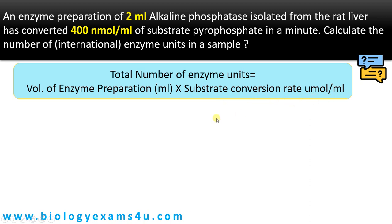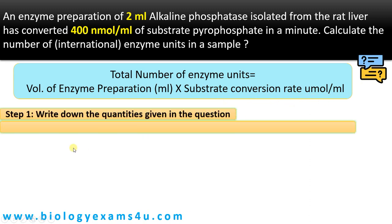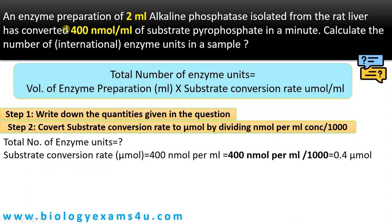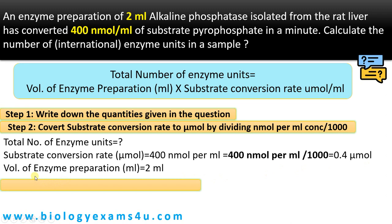The equation is: total number of enzyme units = volume of enzyme preparation (ml) × substrate conversion rate (micromole per ml). Step one: write down the quantities given. Step two: convert substrate conversion rate to micromole by dividing nanomole per ml by 1000. The substrate conversion rate is 400 nanomole per ml, so dividing by 1000 gives 0.4 micromole per ml. The volume of enzyme preparation is 2 ml.